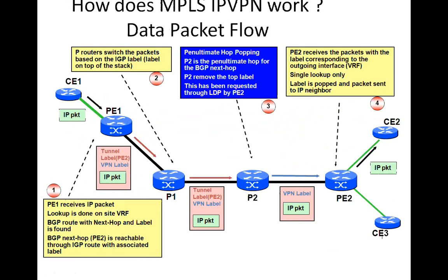Now, typically, how does this look when we are talking of the data plane? Previously we saw the control plane and how things are established. Now, when you actually send a packet, what is it that you do? In this particular case, let us walk an IP packet from one customer premises to the head office, which is CE1, to a branch office, which is CE2.